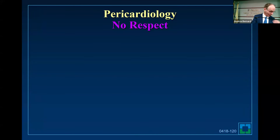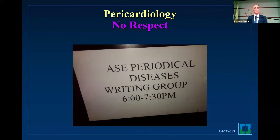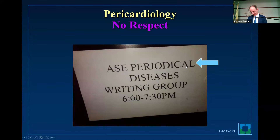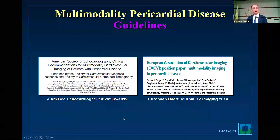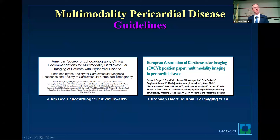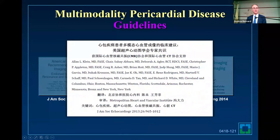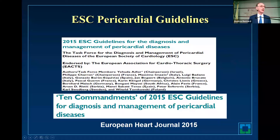We get no respect in this field. When we were writing the guidelines, they couldn't even spell it right — they called it 'periodical diseases.' To this day, I'm fighting with ACC to get a guideline going for pericardial disease. But we did manage to write a guideline on multimodality imaging of the pericardium ten years ago. The Europeans did the same thing a year later, and our guidelines were translated into Chinese. We currently use the European guidelines from 2015 to guide us.